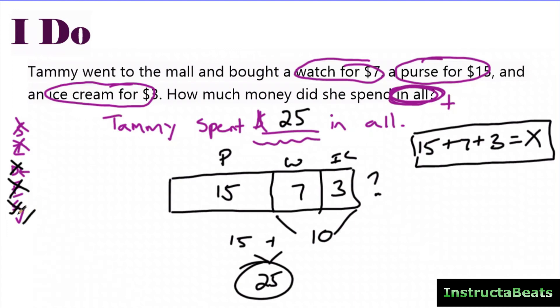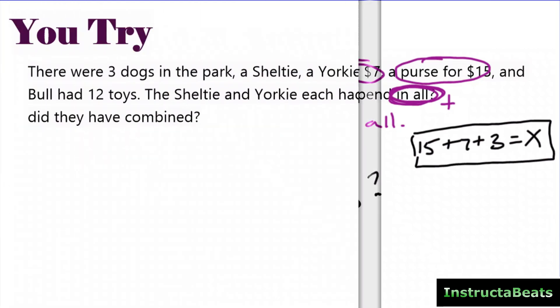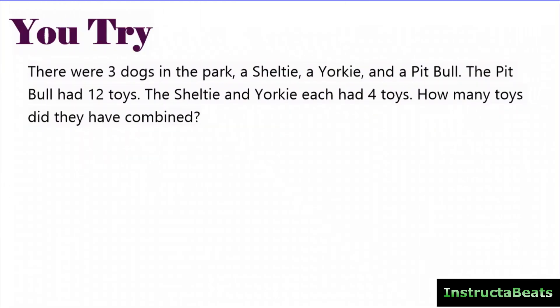The answer is Tammy spent $25 in all. I write it back into my statement to check. You can see that I developed my understanding by drawing a picture — I didn't just use a keyword to know I was adding; I proved it visually. Taking it to algebra is an optional next step. Now go ahead and pause the video to try the next problem yourself, then push play to see how you did.